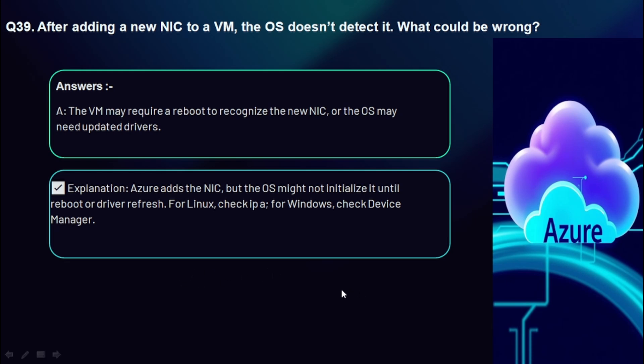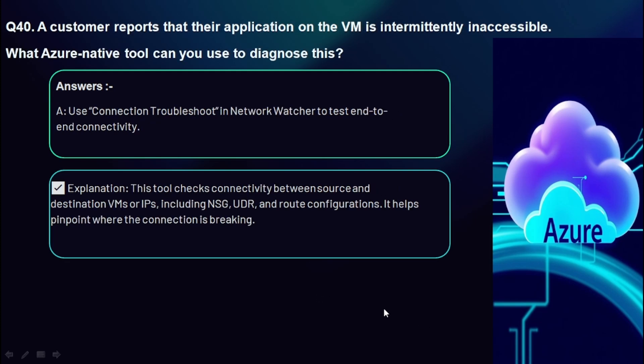Bonus question: A customer reports their application on the VM is intermittently inaccessible — what Azure native tool can you use to diagnose this? Use Connection Troubleshoot in Network Watcher to test end-to-end connectivity. This tool checks connectivity between source and destination VMs or IPs, including NSG, UDR, and route configurations, and helps pinpoint where the connection is breaking.